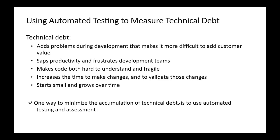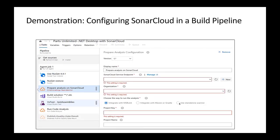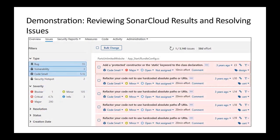A basic way to configure SonarCloud in your pipeline is through the Azure DevOps marketplace, which is where you download plugins. You can add multiple SonarCloud steps — prepare analysis, run analysis, and publish the quality gate. You install the SonarCloud plugin, include it as part of your job, then provide a service connection endpoint. When you click Manage, you give the SonarCloud URL along with your username and password.